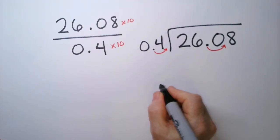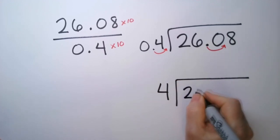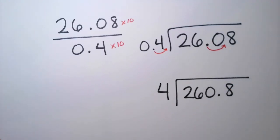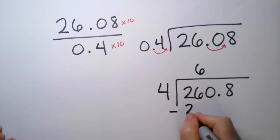So let's rewrite this. This is going to be a 4 divided by 260.8. So that's the problem we're going to do. So 4 goes into 26, 6 times. And the difference is 2.